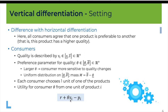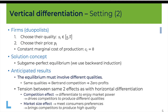A larger S_i increases the utility for all consumers. Additionally, for a given quality, the larger the value of theta the larger the utility of the consumer. This confirms that theta is a measure of how much consumers are sensitive to quality changes.